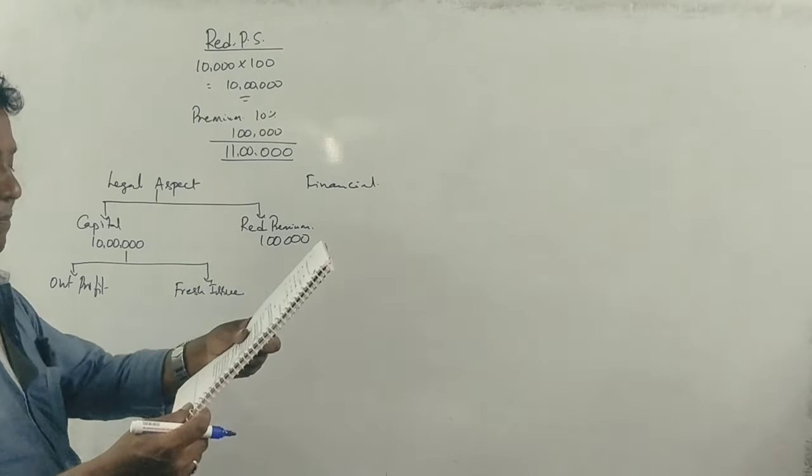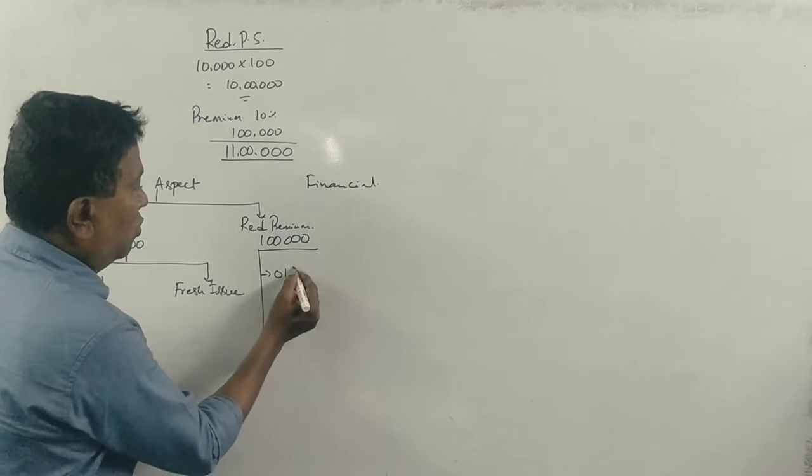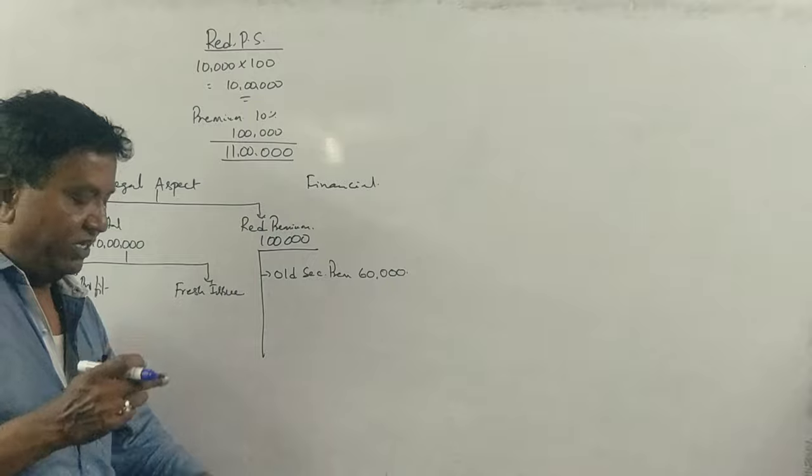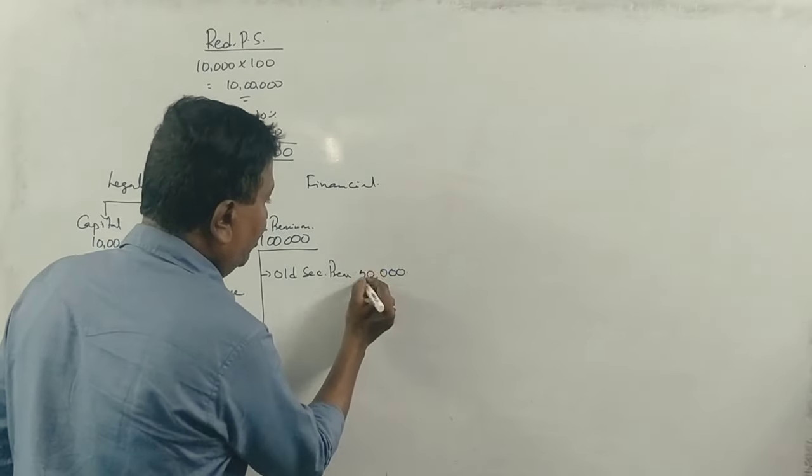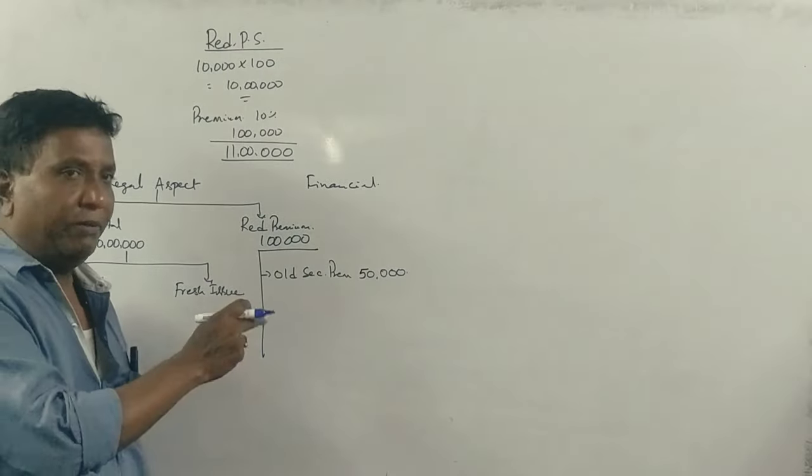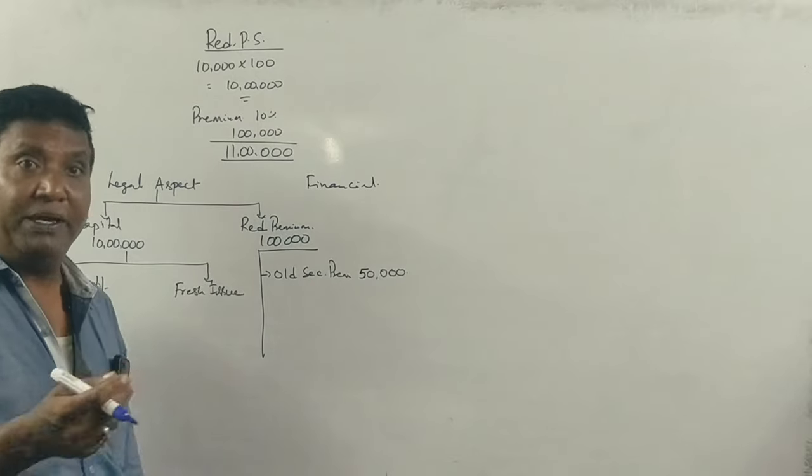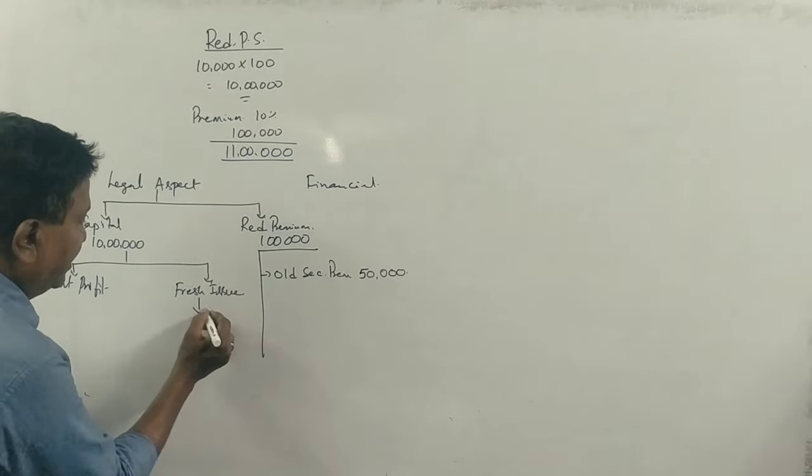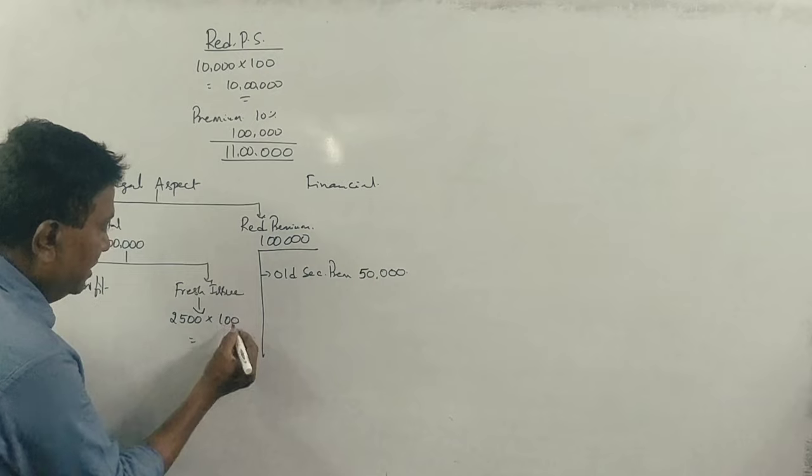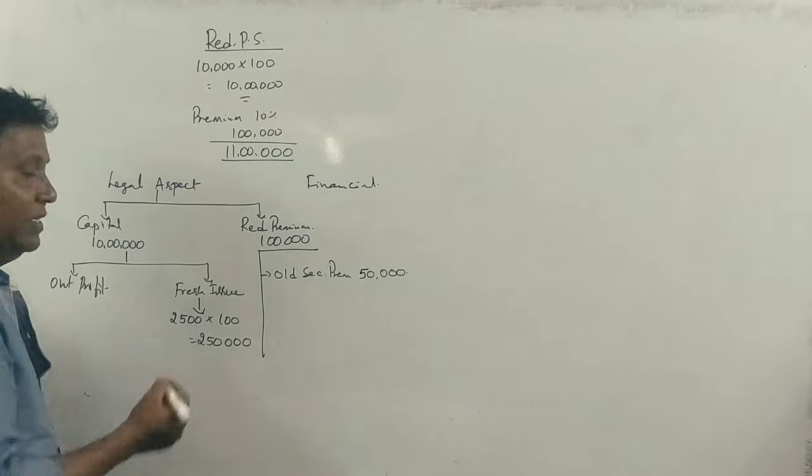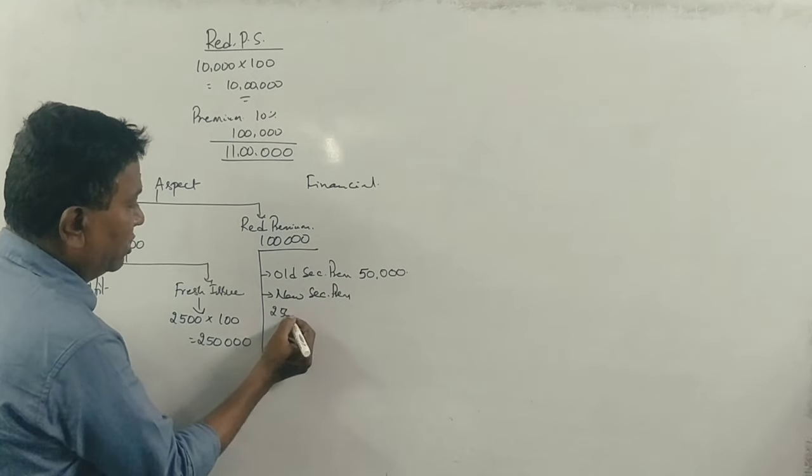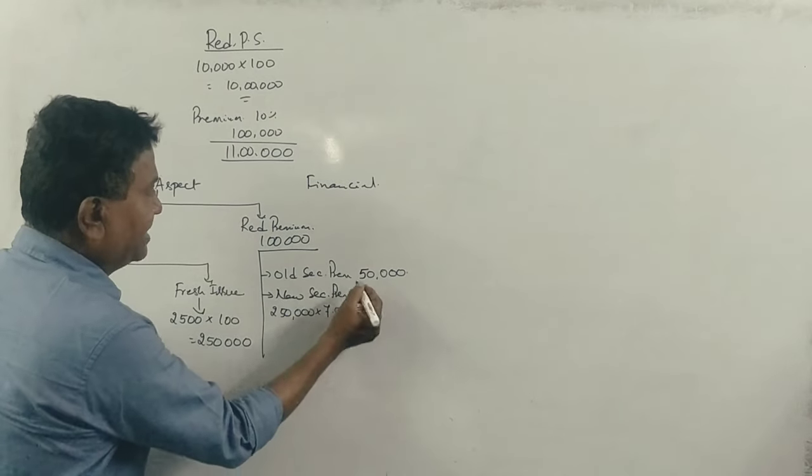Now, what about security premium? Old security premium. The first thing is to pay the redemption premium. The redemption premium is paid from old security premium. What is available? 50,000. How much do we need? 1 lakh. We need to raise more. We're issuing 2,500 equity shares at 100 rupees each. That's 2,50,000 rupees. Correct? From the 2,50,000, security premium will be collected. 2,50,000 at face value, and 7.5% premium, that's 18,750 rupees.